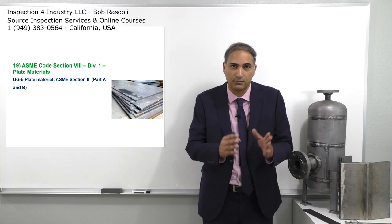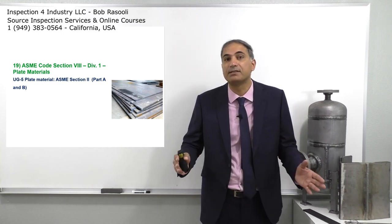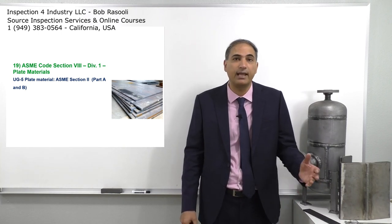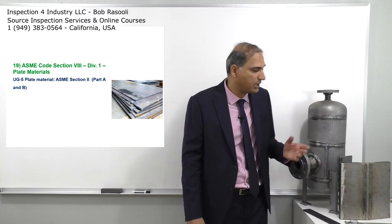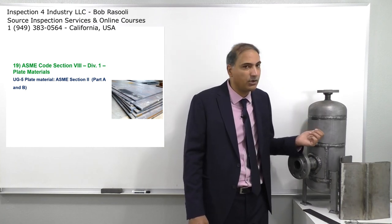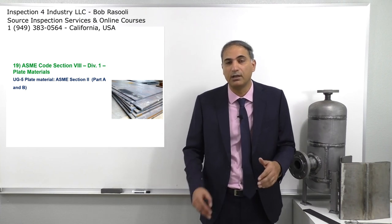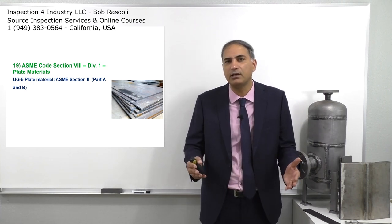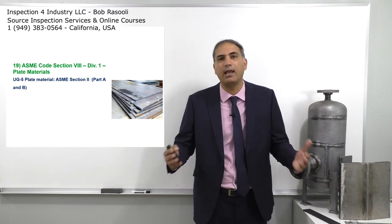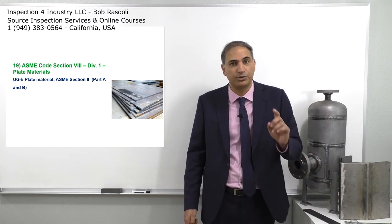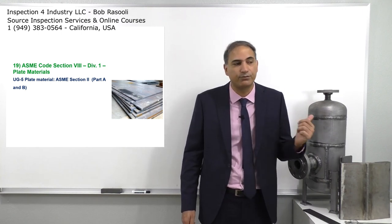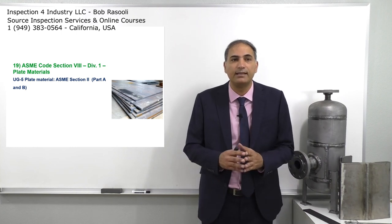UG5 on general requirements says the plate material should be selected from ASME Section 2 Part A and B. For a ferrous material like this one, it's going to be from Part A. If it is a high-alloy material like Hastelloy, then we go to Part B. What it says here is that it should be an ASME material — it should be an SA material — selected from ASME Section 2 Part A for this carbon steel material.